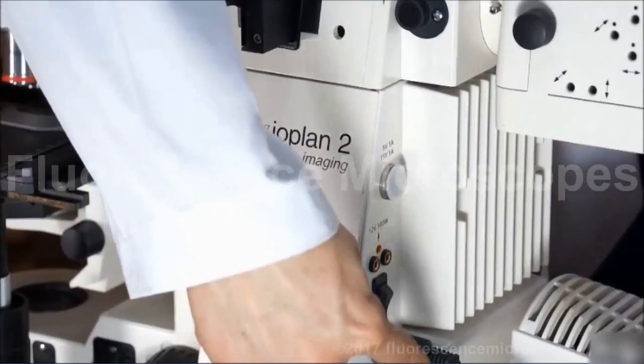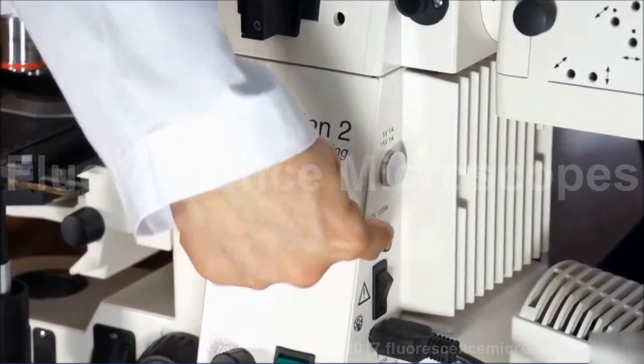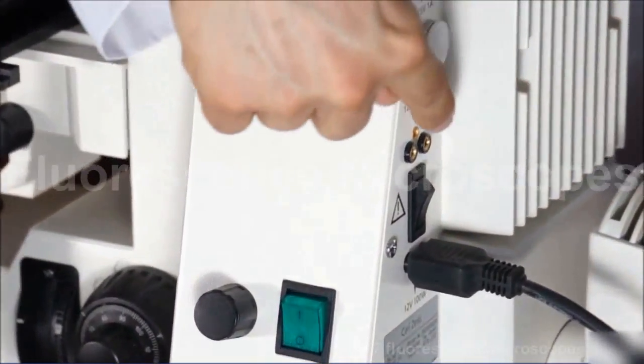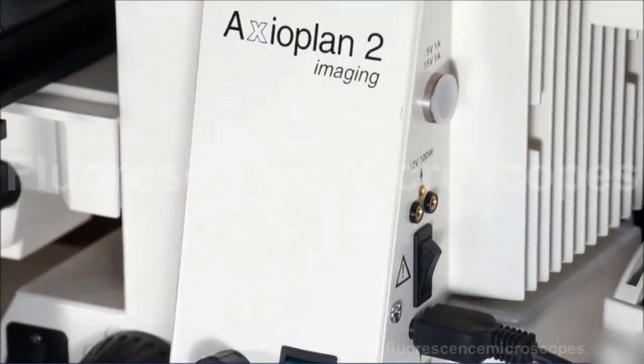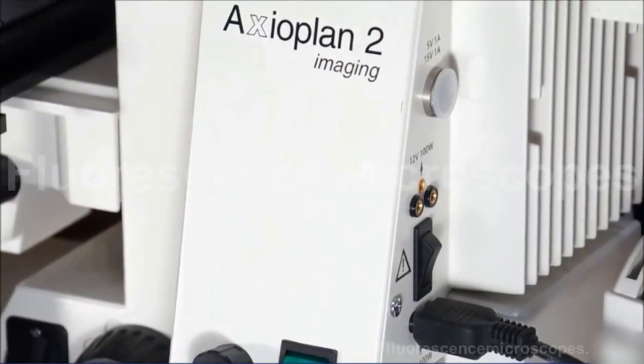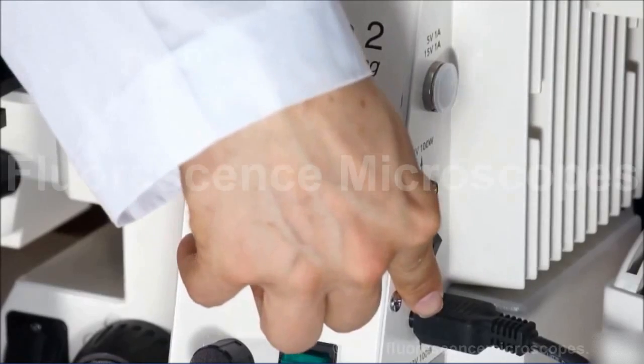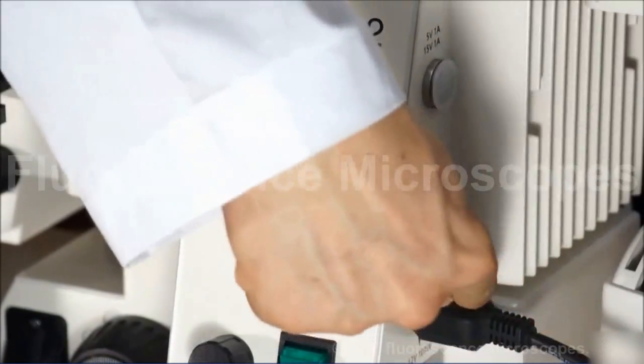You've got two different ports for your halogen. This is if you were to have a halogen at the top. We're not using a halogen at the top because we're not configuring it for metallurgical. It's configured for fluorescence, so we're only using the bottom halogen.